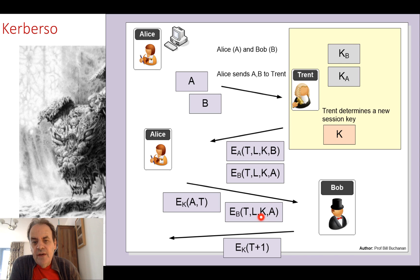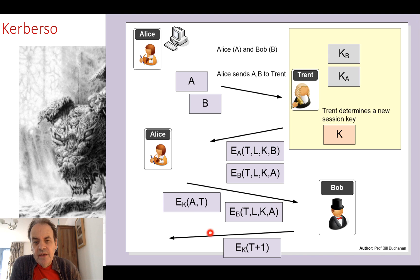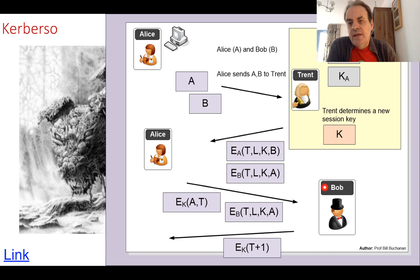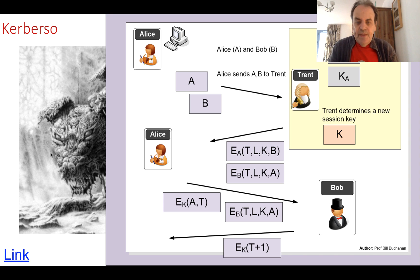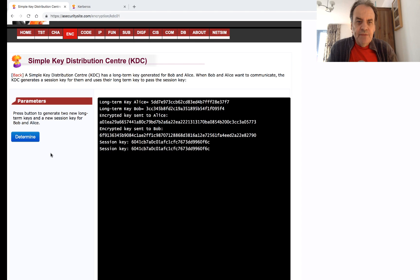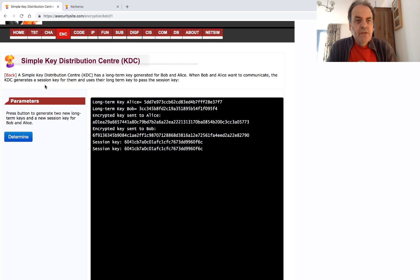As Bob now has the key, he sends back the next timestamp encrypted with the session key so that both parties can verify that all parameters have been received correctly. Now both Alice and Bob have the same key for the connection.